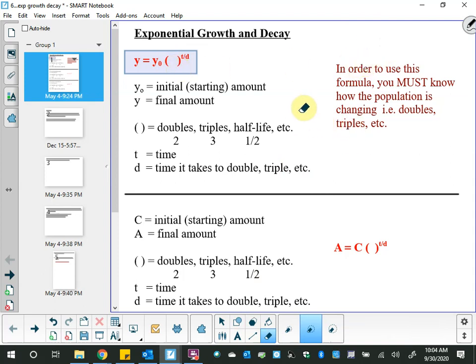In order to use the formula we use here, as opposed to in calculus, you must know how the population is changing. So I must be telling you whether it's doubling, or tripling, or whatever the case is.